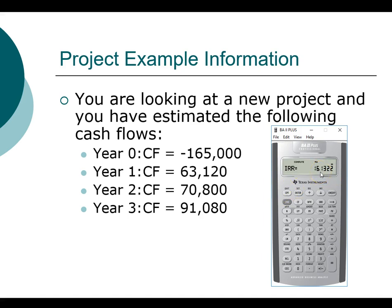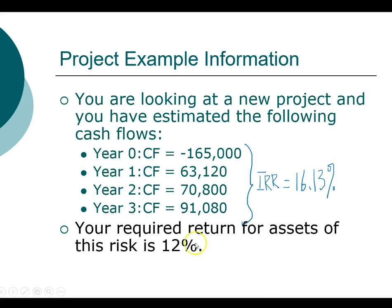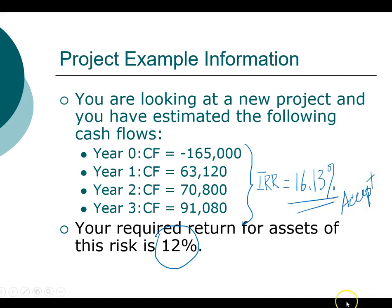The internal rate of return in this case is 16.13%. A very natural question is: should we accept or reject this project? To make that decision, we have to look at the required return for this project, which is 12%. Since this project generates a 16% return when you are requiring only 12%, the internal rate of return is greater than your minimum requirement and therefore you will accept this project. We've figured out how to compute the IRR and how to apply this number to help us make decisions.